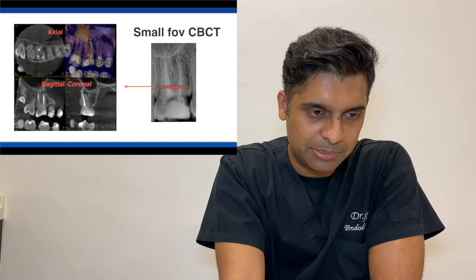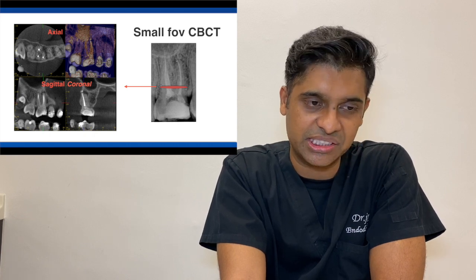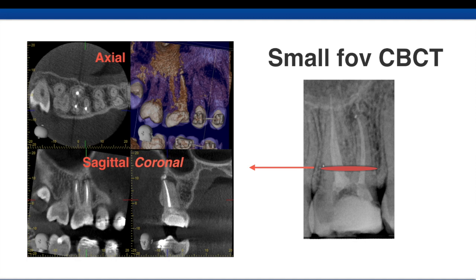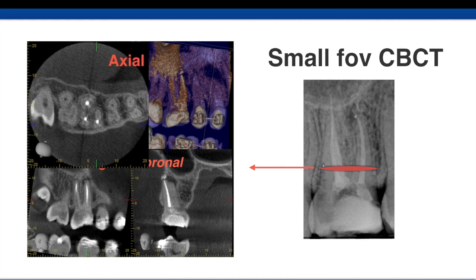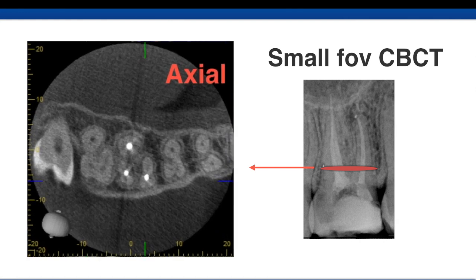We subjected this patient to a CBCT and the sections you get are axial, coronal, and sagittal. The red circle on the preoperative radiograph marks where I make the section. Looking at the axial view, you see three white dots — those are the obturated canals: MB1, distobuccal, and palatal. The MB2 is clearly visible on the scan, and if you can see an MB2 there, you can be sure the canal is patent and easy to negotiate to the apex.